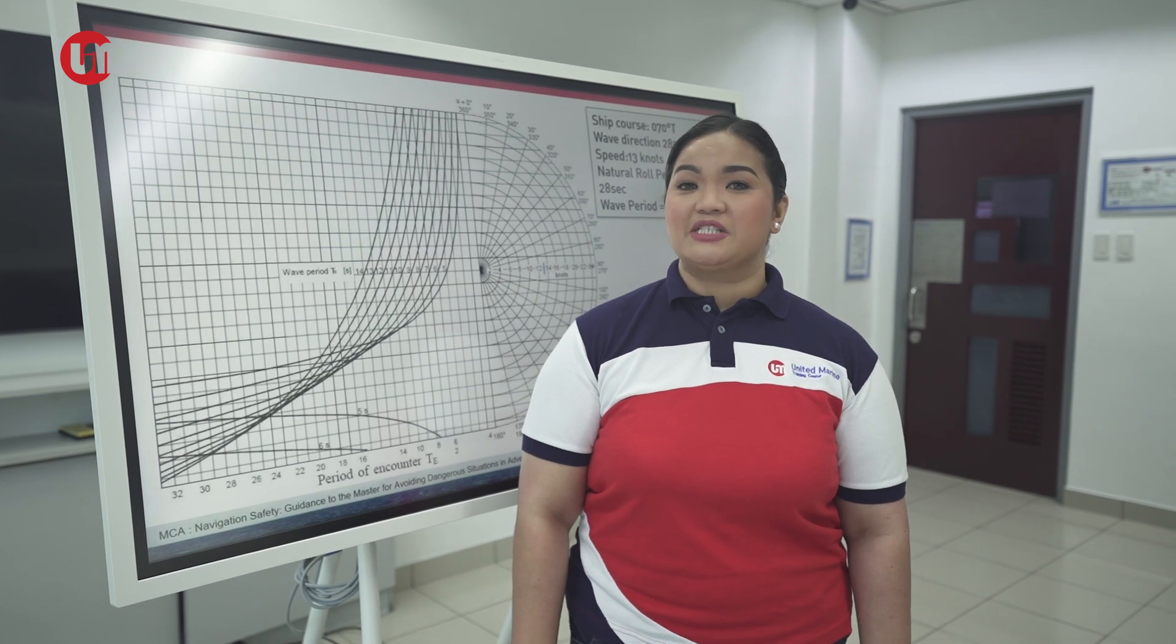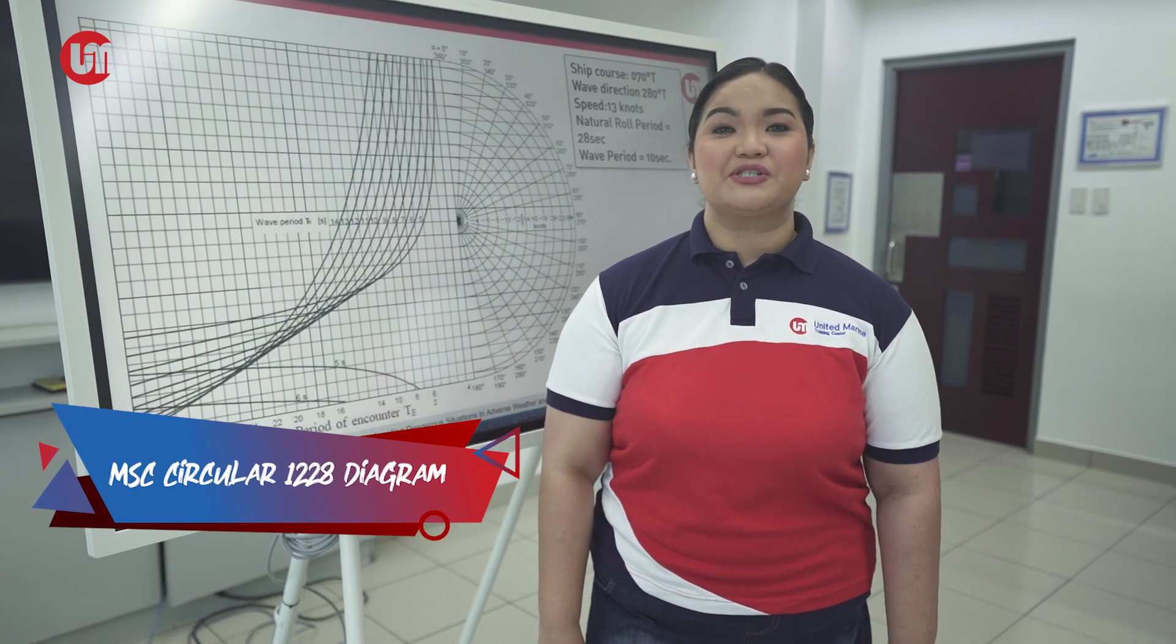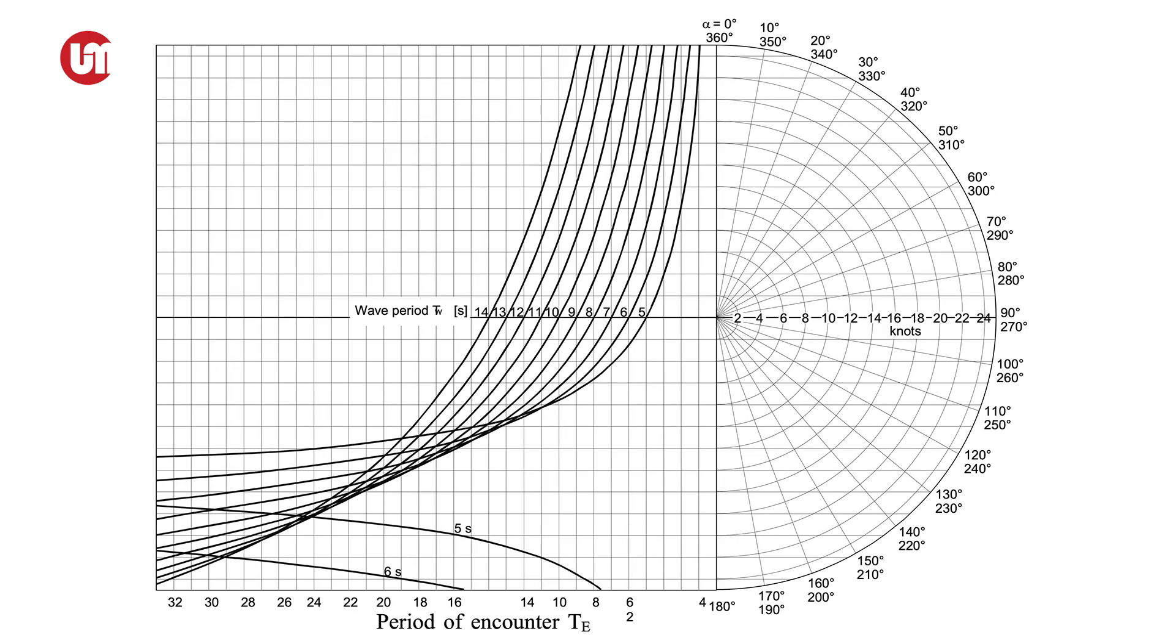To prevent these accidents from happening, we need to determine if our vessel is encountering parametric rolling and we have to identify necessary control measures to address this stress. We can do this by using MSC circular 1228 diagram. For example, we have the following parameters.